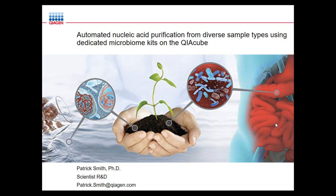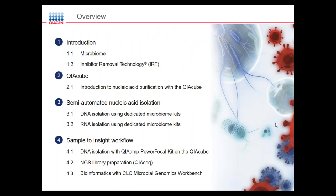Thank you all for joining us today. I hope you enjoy the webinar — please, as Kael said, type any questions you have in the box on your screen, and we'll be happy to answer them at the end. Today I'm going to talk about the automated nucleic acid purification from different sample types using microbiome kits on the KaigenCube. The webinar will consist of four parts: an introduction briefly covering the microbiome and our inhibitor removal technology; the KaigenCube and how it works; semi-automated nucleic acid purification using both DNA and RNA kits; and finally, a sample-to-insight workflow using the Kaigen Power Fecal Kit, library preparation kits, and bioinformatics with the CLC Microbial Genomics Workbench.